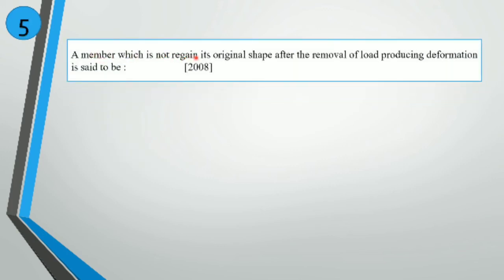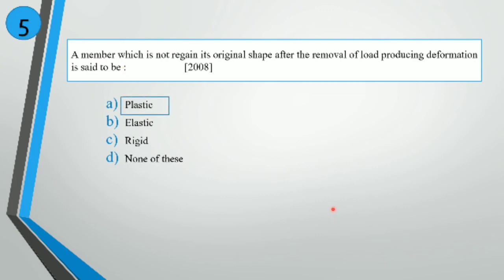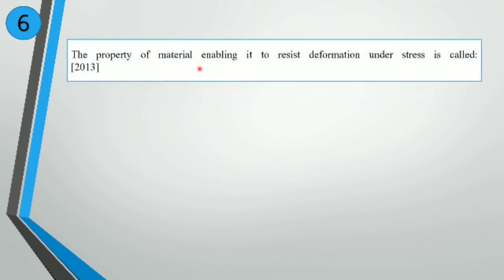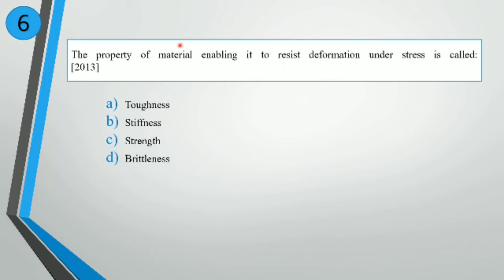A material which does not regain its original shape after the removal of the load producing deformation is said to be plastic. Elastic materials regain their original shape; plastic materials do not. The property of a material enabling it to resist deformation under stress is called stiffness.